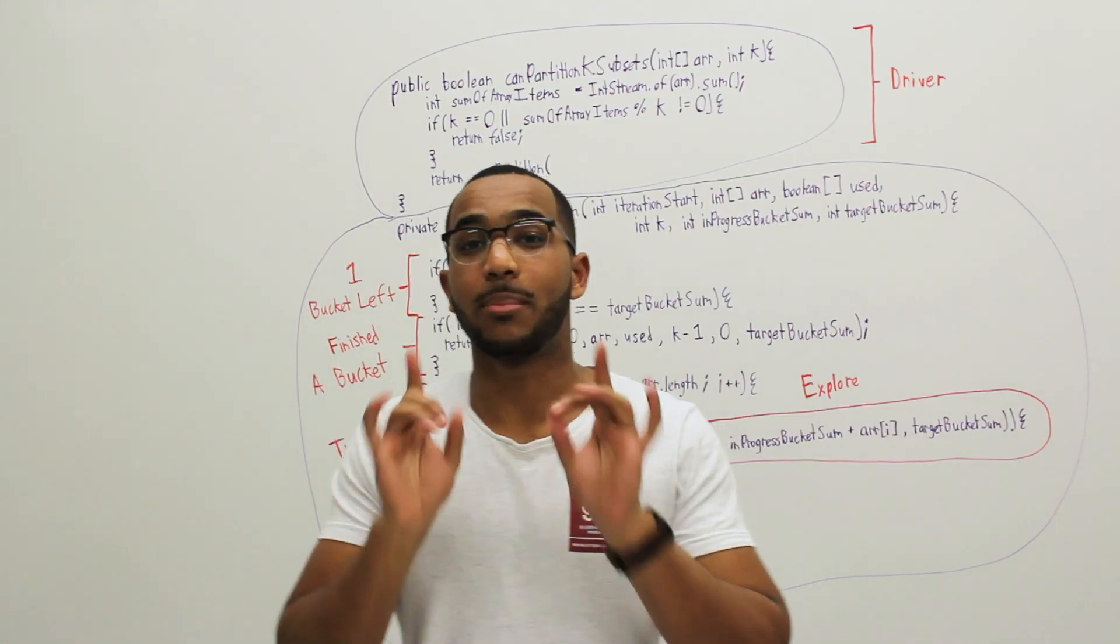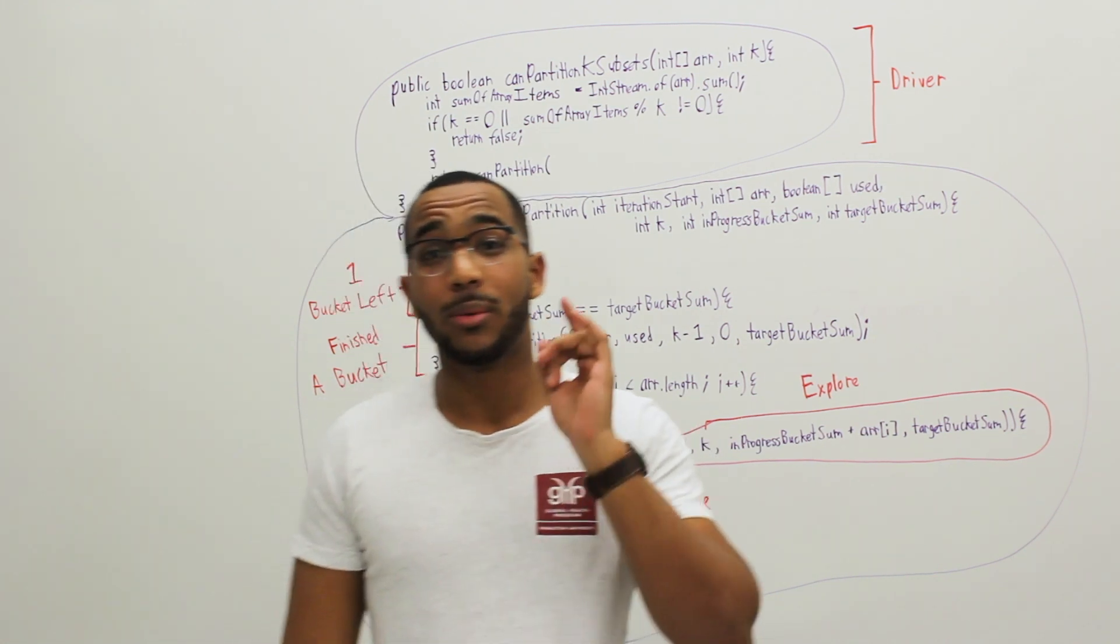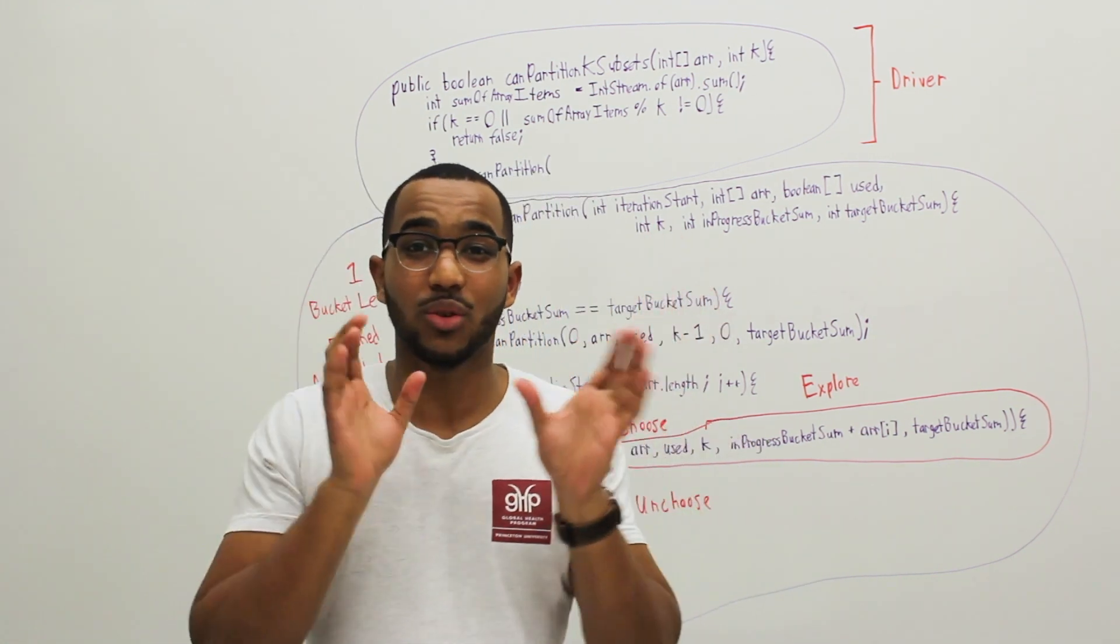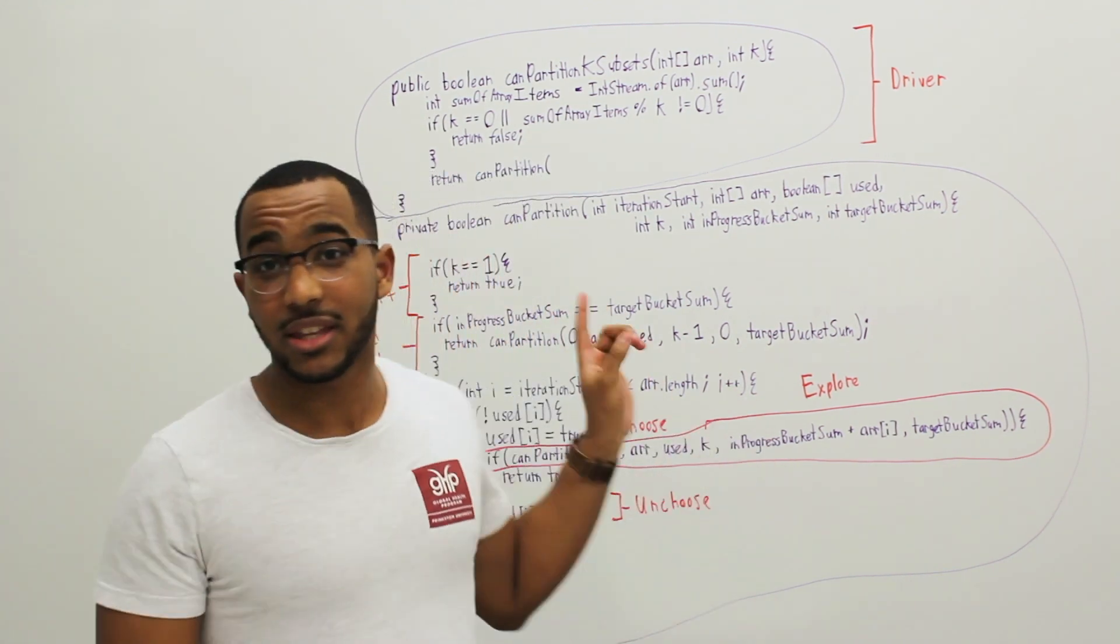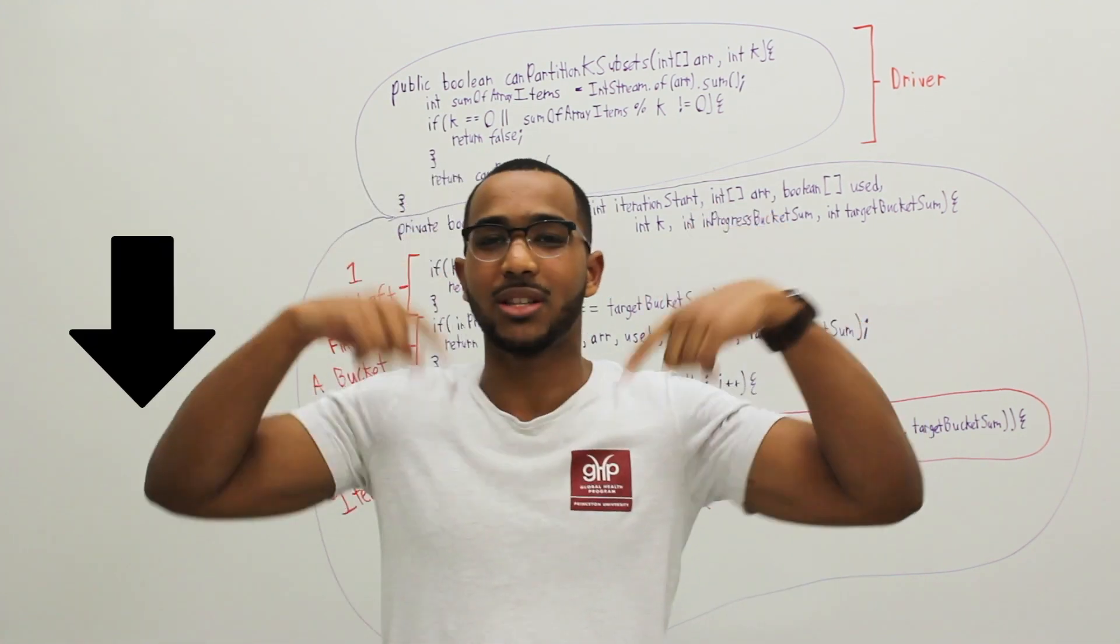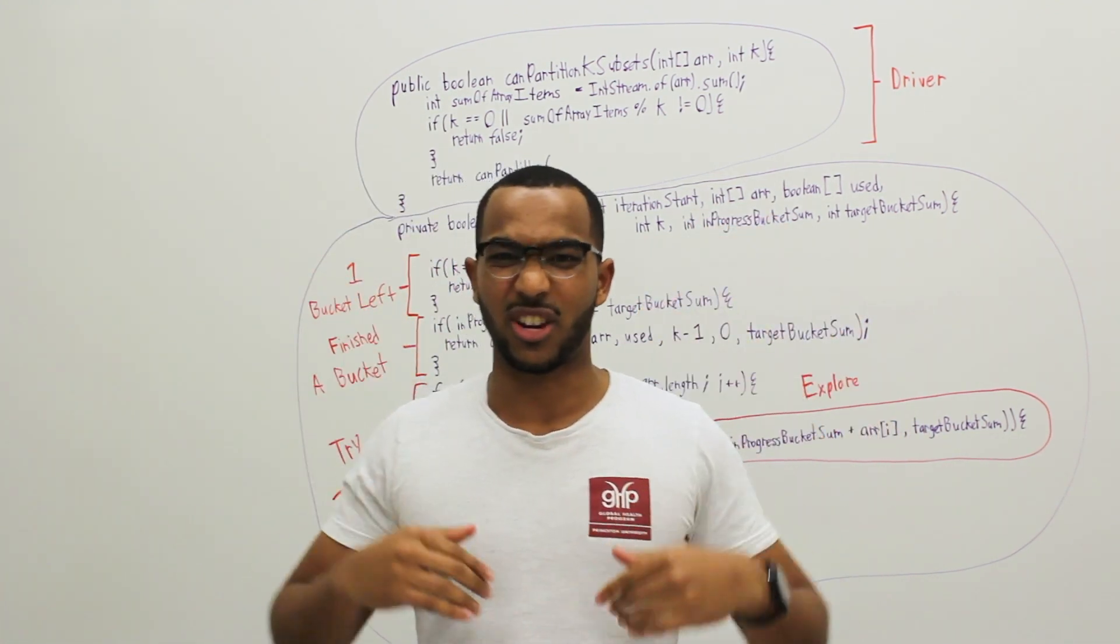But let's just look at the backtracking solution for this video. When we approach this with the backtracking approach, keep in mind there's also the dynamic programming approach. When we do the backtracking approach, we're trying to fill the k buckets that we need to fill. We're trying to fill these buckets in this recursive code. And the code is in the description as well. Code is always in the description. Comment it fully for your understanding.